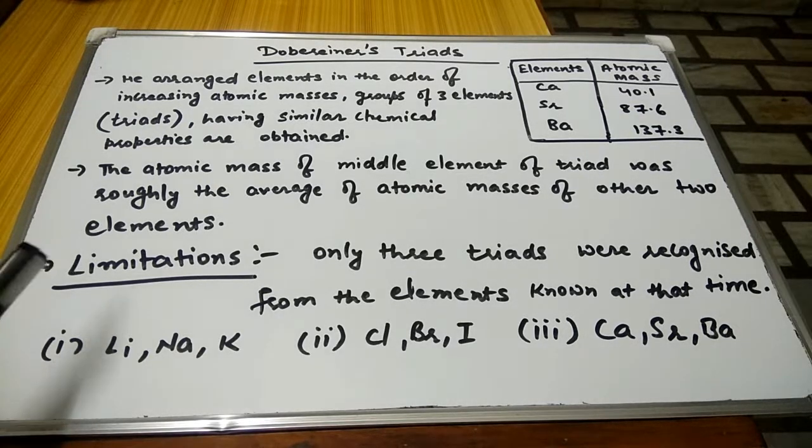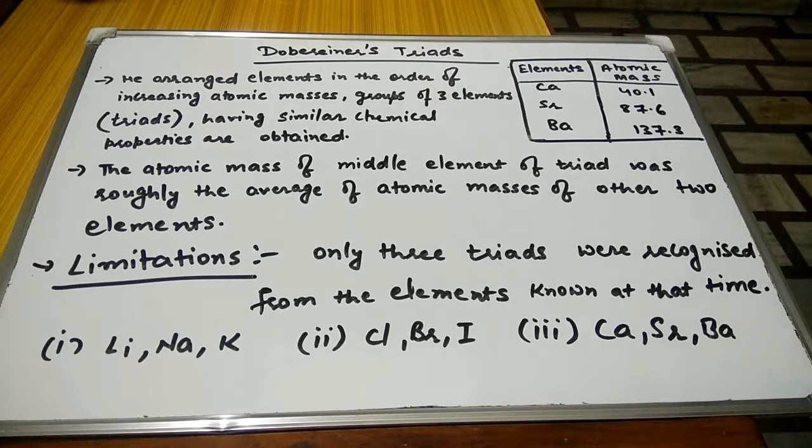So he was just trying to say that we need to get a group of three elements in which the average of first and third atomic masses will be equal to the middle one.